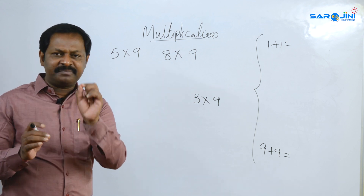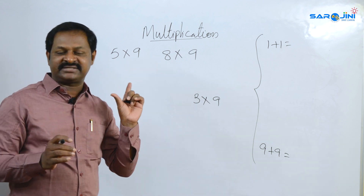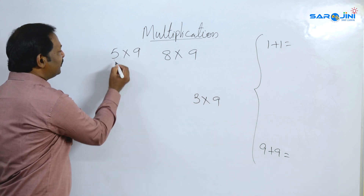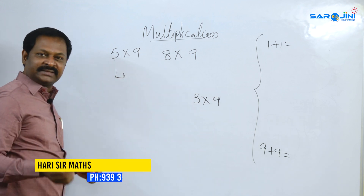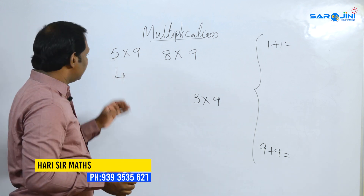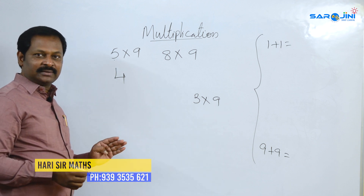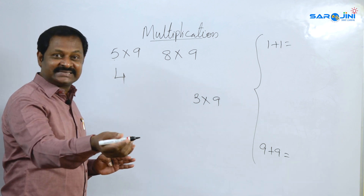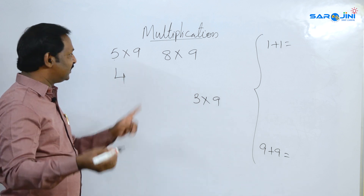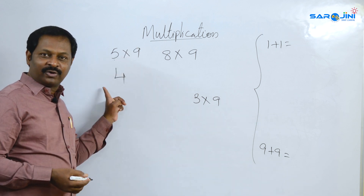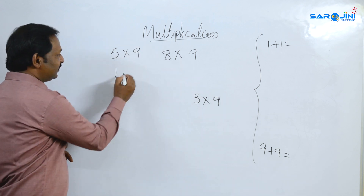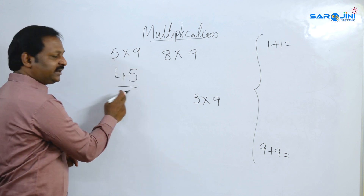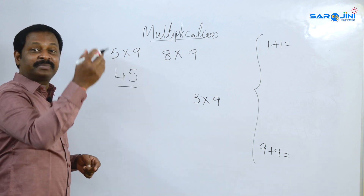5 is simple — one number is minus 1, so one number is less: 5 minus 1 is 4. 5 and 4 make 9. So the answer is 5 × 9 = 45.